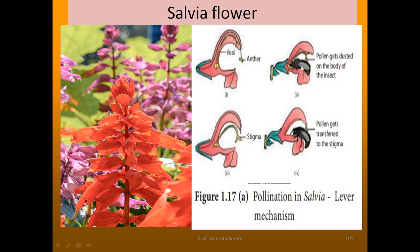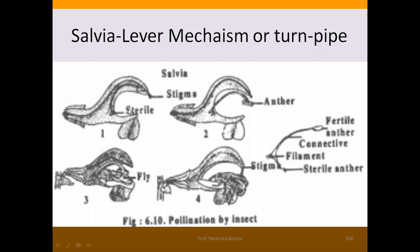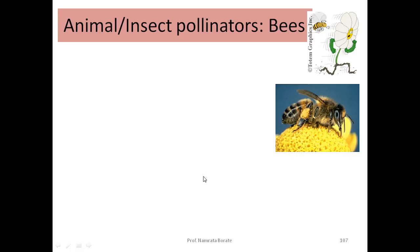When bees visit from one flower to another, the mature stigma gets in contact with the pollen. The pollen grains, which are present on the back side of the insect body, get transferred to the stigma. This image shows the bifurcated stamen — the lower one is the sterile anther and the upper one is the fertile anther. This is called the turn-pipe mechanism or the lever mechanism.